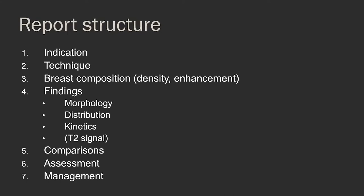The report structure has certain consistent elements. You need to have the indication — so your insurance company will pay. You need a delineation of the technique, including the type and amount of gadolinium contrast. There needs to be an indicator of breast composition — both the density and the enhancement pattern of the background parenchyma. For each finding, you'll describe the morphology, distribution, and kinetics of contrast enhancement, and potentially other elements such as T2 signal. As always, compare every study to prior studies, give your BIRADS category, and indicate further management.